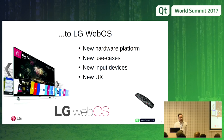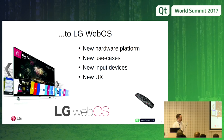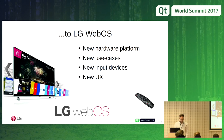LG acquired the WebOS IP, and we migrated to a new hardware platform with new use cases and different input devices. You can see the magic remote, which is a pointing device combined with a four-way arrow key navigation ring and a scrolling wheel — all of which the HP devices didn't have, as they were all touch. We wanted a new UX to fit the TV use cases, since touch doesn't make a lot of sense on a TV.